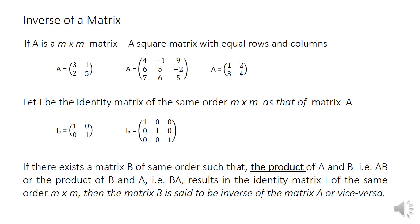Let us consider matrix A which is an M by M matrix — that means the number of rows and columns are equal, so it is a square matrix. For example, a 2 by 2 matrix can be written as A equal to [3, 1; 2, 5], with 2 rows and 2 columns. Similarly, a 3 by 3 square matrix has 3 rows and 3 columns.